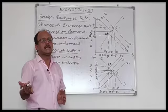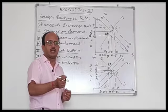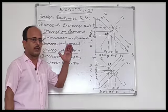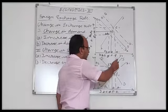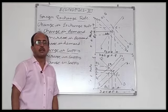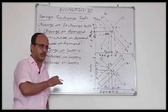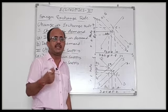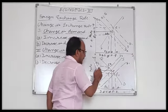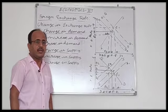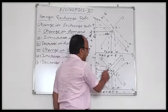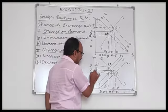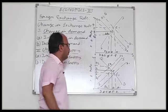So with the increase in supply of foreign exchange, our domestic currency appreciates and the foreign currency depreciates. On the other hand, if the supply of the foreign currency reduces, the supply curve shifts to S2S2 and it intersects the DD demand curve at point E2.